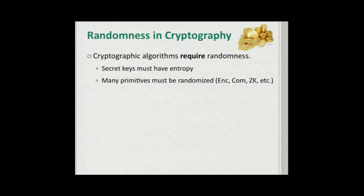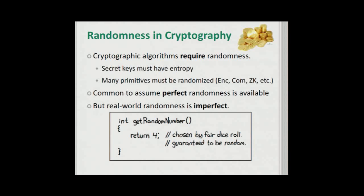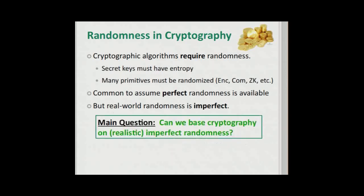I'm going to start talking about randomness in cryptography. We know that cryptographic algorithms require randomness. Secret keys must have entropy and certain primitives must be randomized. It's common for us to assume perfect randomness in our analysis, but we know that real-world randomness is imperfect. So we need to ask the question: can we base cryptography on realistic imperfect randomness?